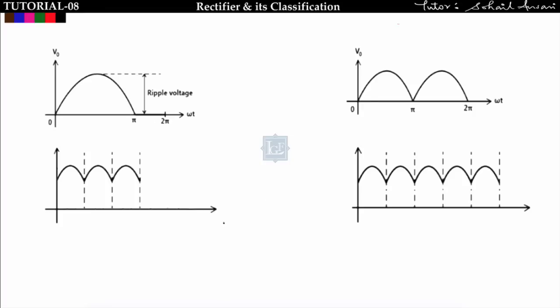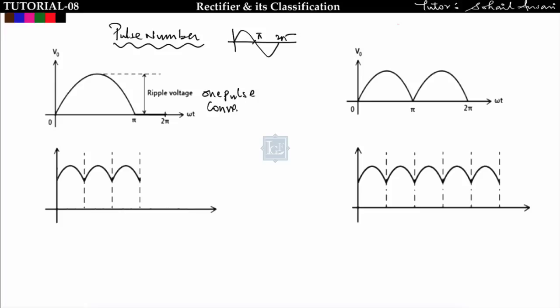There is another classification of rectifiers based on pulse number. We give an AC sinusoidal input and observe the output pulses per cycle. For example, if the output goes from zero to π and is zero from π to 2π, we get only one pulse per cycle — this is a one-pulse converter.